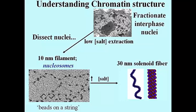The 30 nanometer solenoid becomes looped structures, and the looped structures can condense into chromosomes by the addition of more proteins.